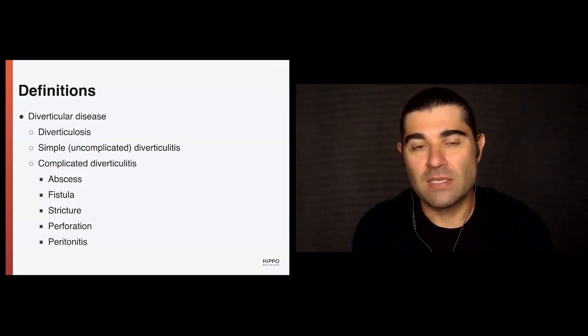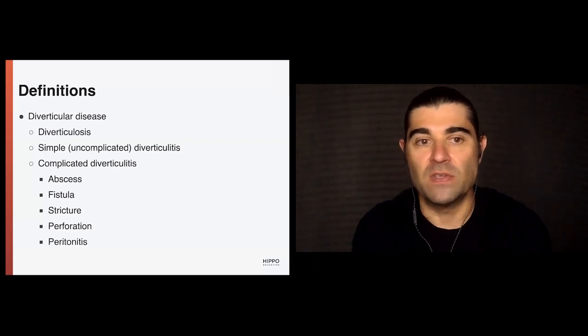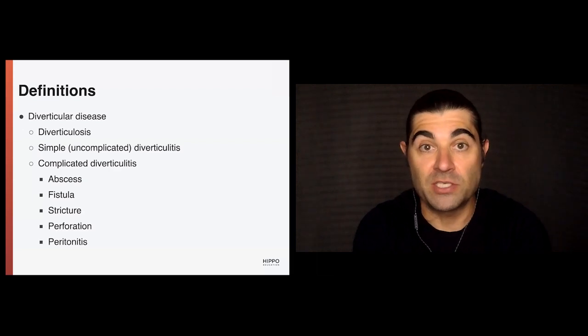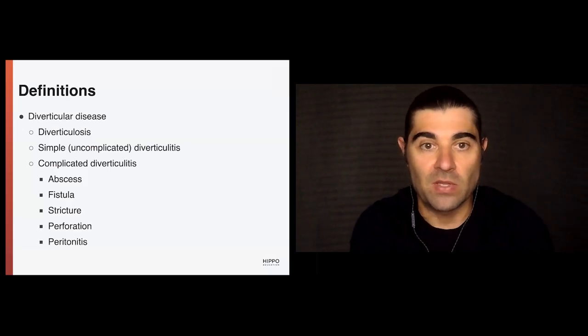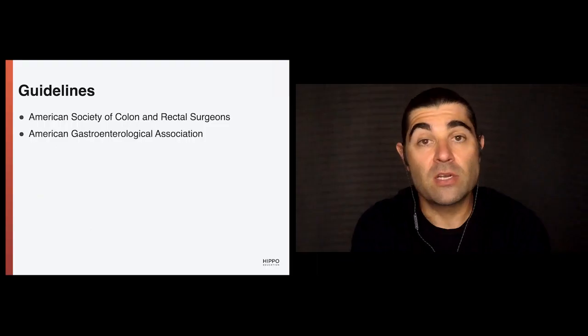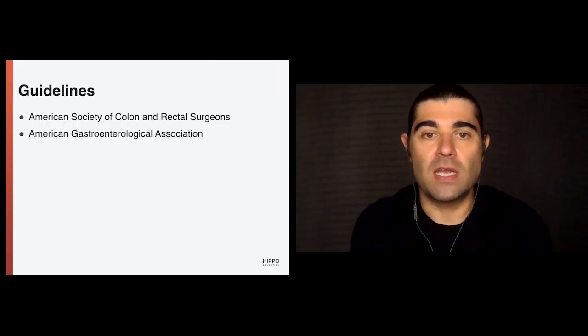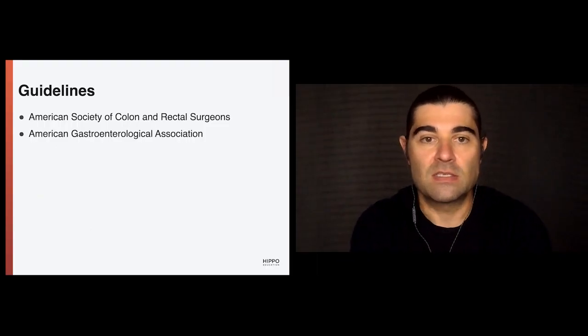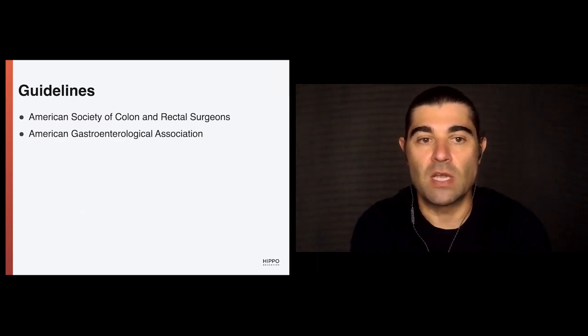For complicated diverticulitis, complications include abscess formation, fistula formation, stricture formation, perforation, and peritonitis. The pathophysiology of diverticular disease is not entirely known — it could be due to altered gut motility and alterations in intraluminal pressures, but it hasn't been fully established. There are two societies with guidelines on management: the American Society of Colon and Rectal Surgeons and the American Gastroenterological Association.